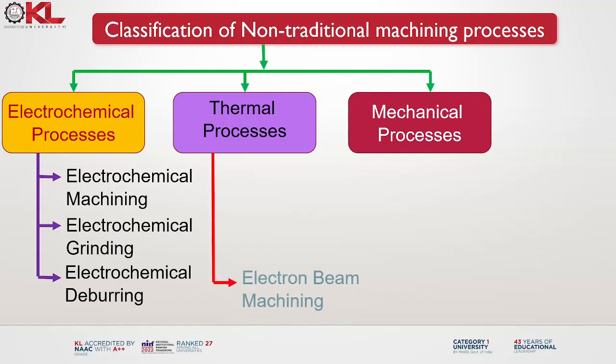Under thermal processes, the first sub-category is electron beam machining. Electron beam machining is a non-contact machining process that utilizes a high energy electron beam to remove material from a workpiece. It is a precision machining technique commonly used in industries that require high accuracy and intricate shapes, such as aerospace, automotive and medical device manufacturing, where high accuracy, intricate shapes and fine details are required.